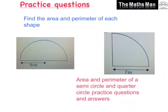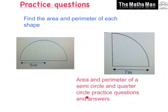I hope you now know how to find the area and perimeter of semicircles and quarter circles. Here are a couple of questions that you can try: find the area and perimeter of a semicircle and a quarter circle. I'll put the answers up in the next video. Thank you, good luck, see you soon.